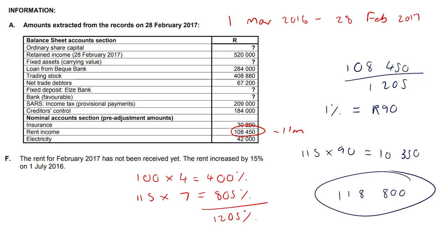And this 10,350 you would plug into your balance sheet under current assets, trade and other receivables — 10,350. And that's the question done.